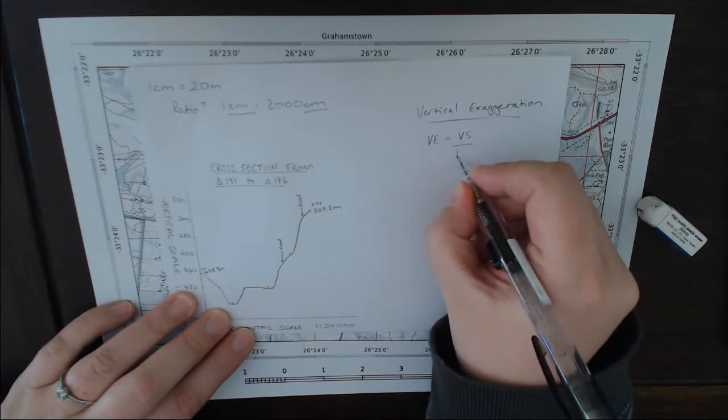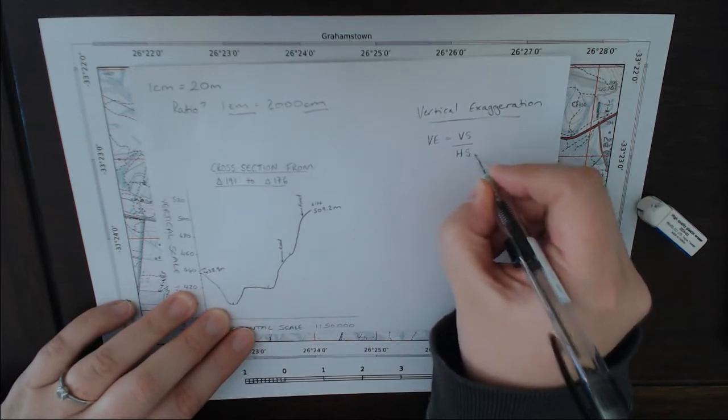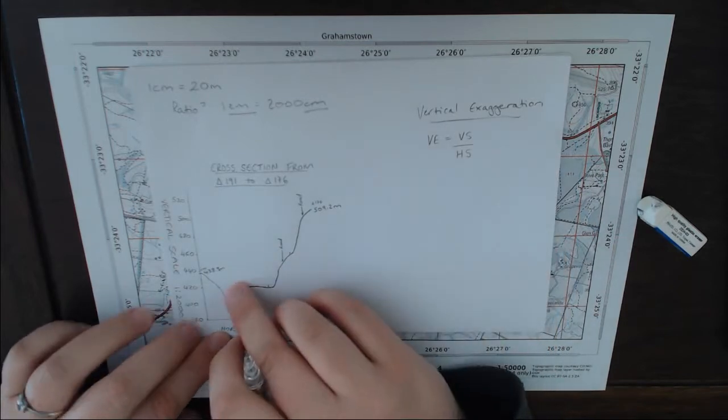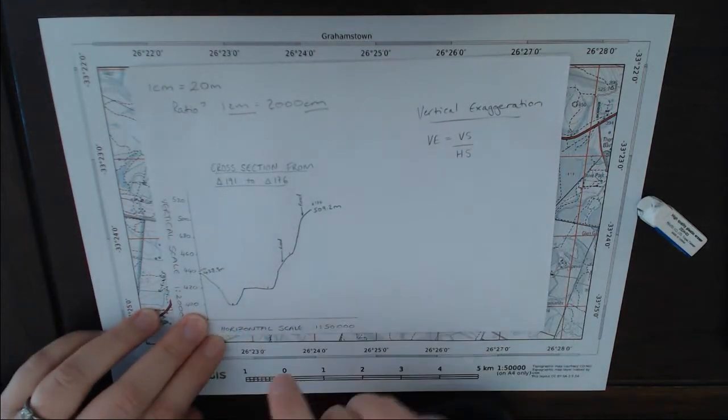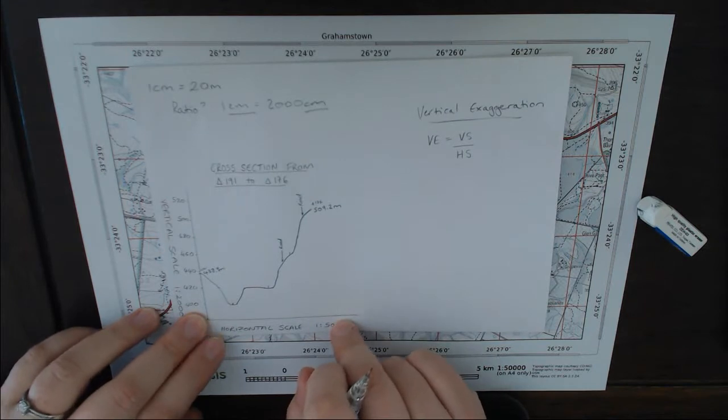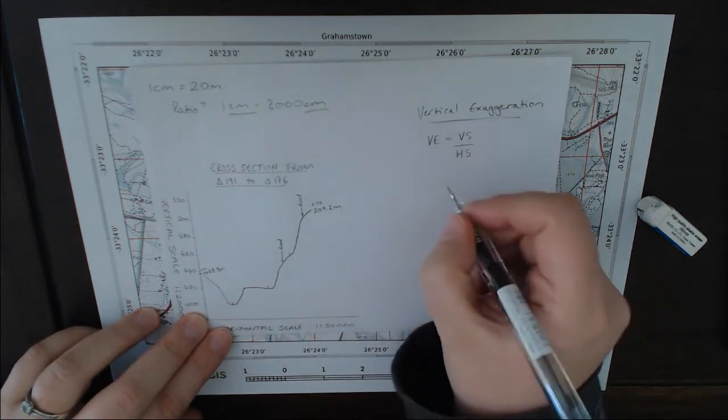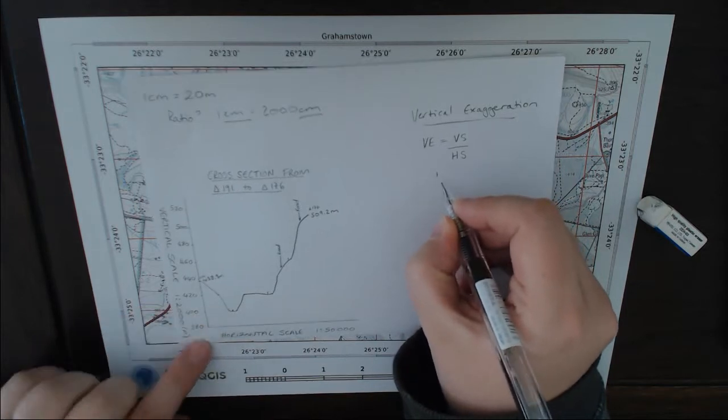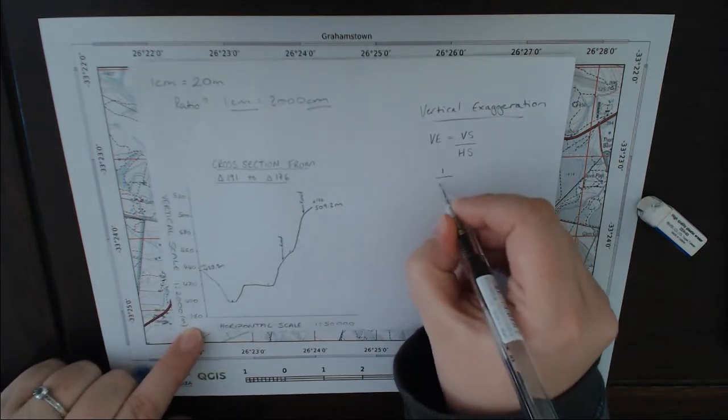Our vertical exaggeration is our vertical scale over our horizontal scale. It's vertical divided by horizontal. So our horizontal we know is 1 is to 50,000 and our vertical is 1 is to 2,000, which I explained in that cross-section video.